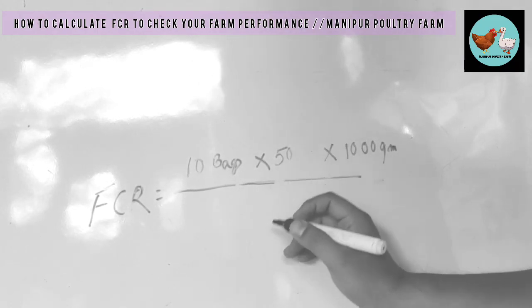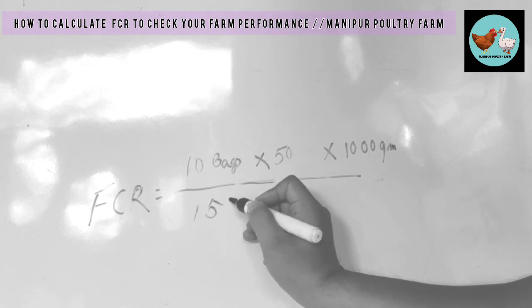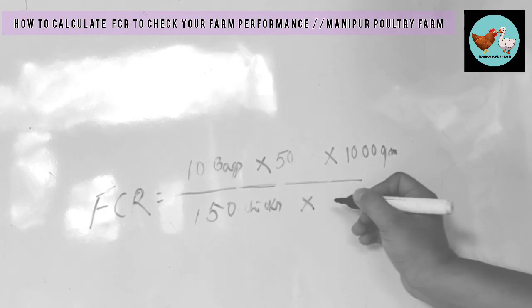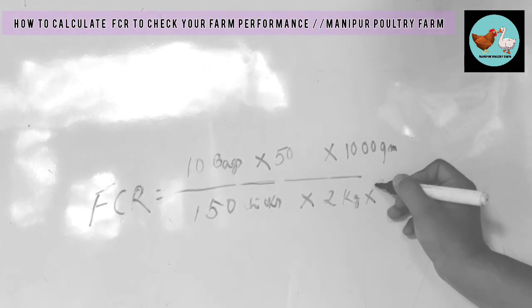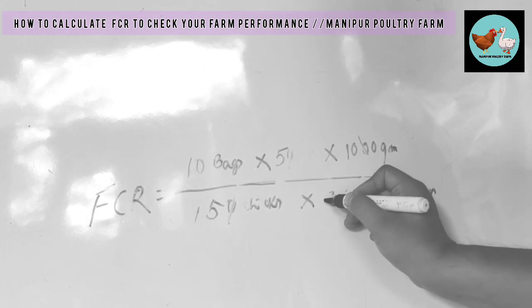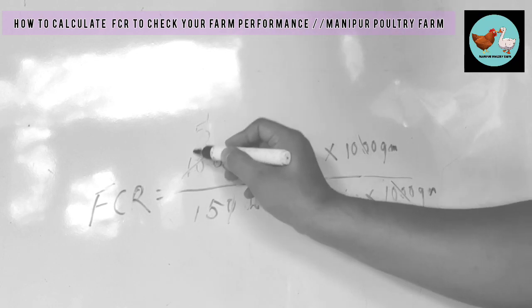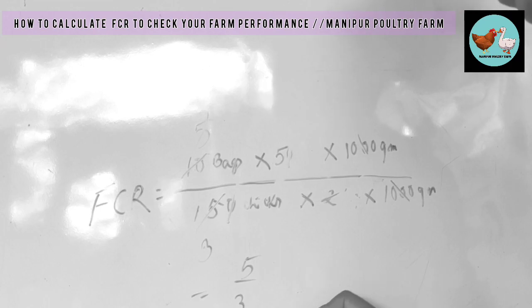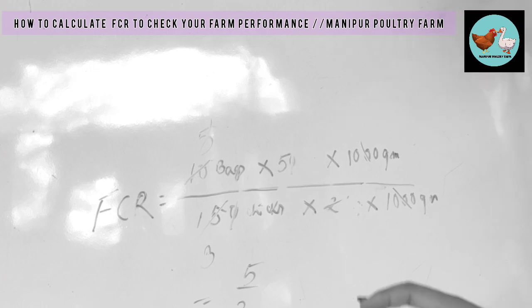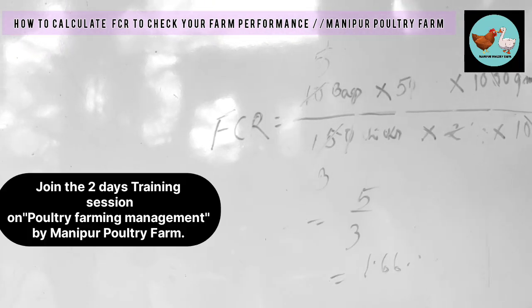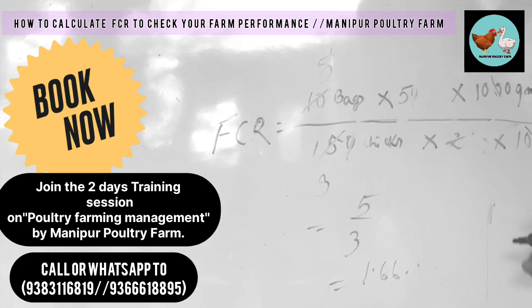10 bags, if it is like 15 kgs — five by three data, divided by toner — gives approximately one point six. So this is the FCR: one point six.